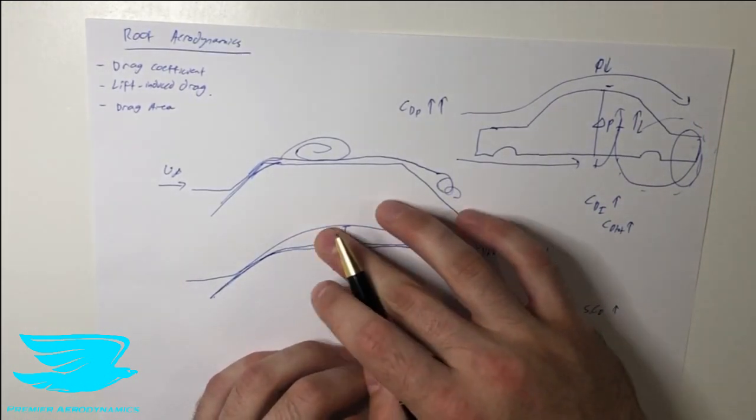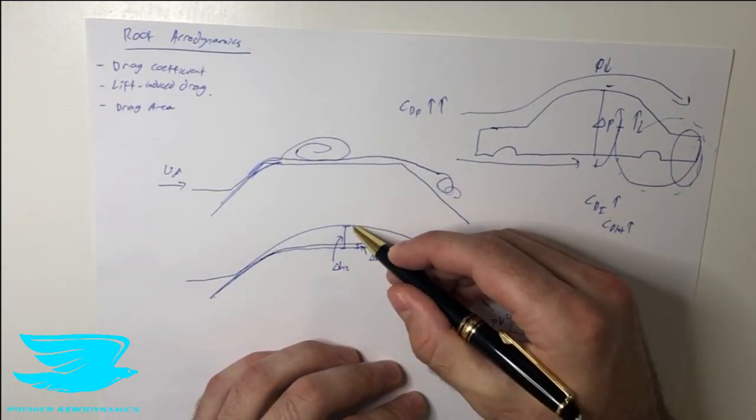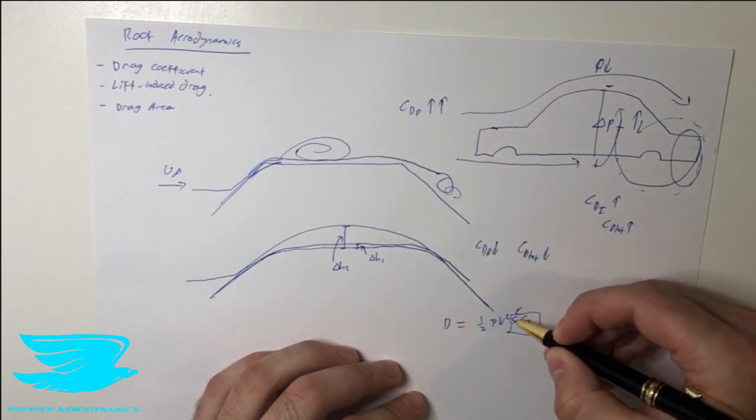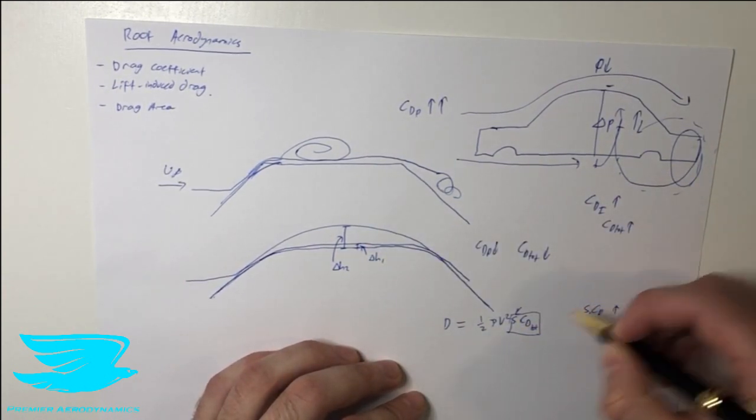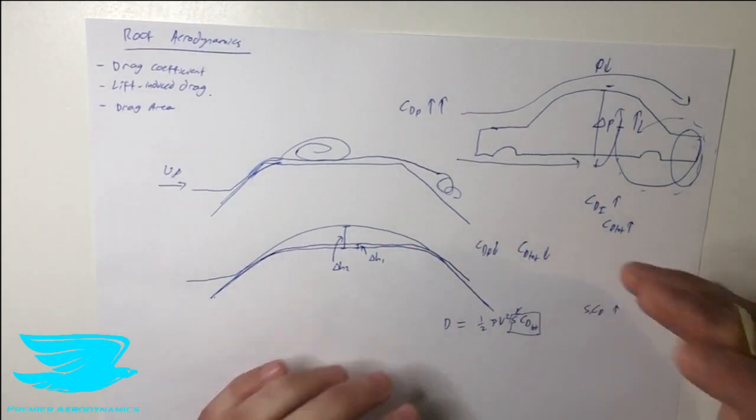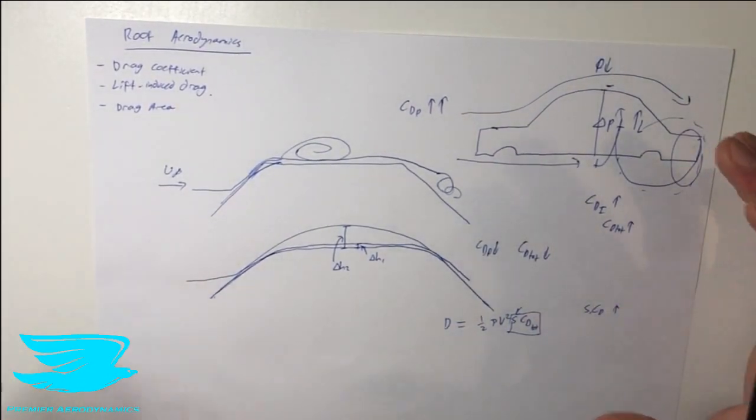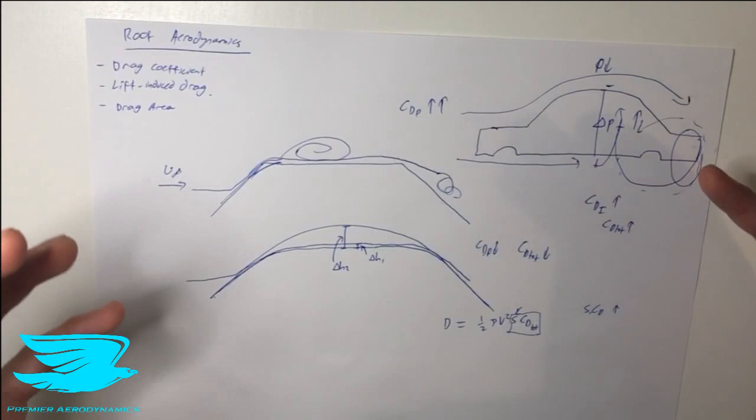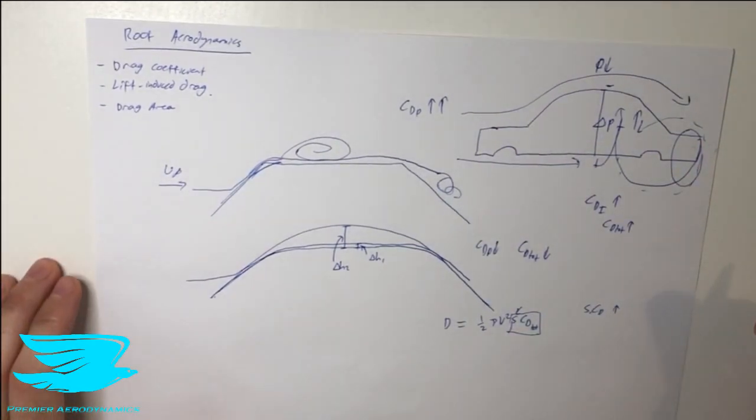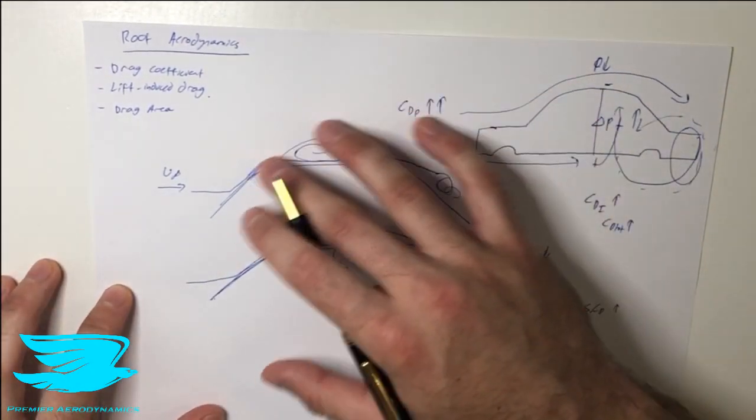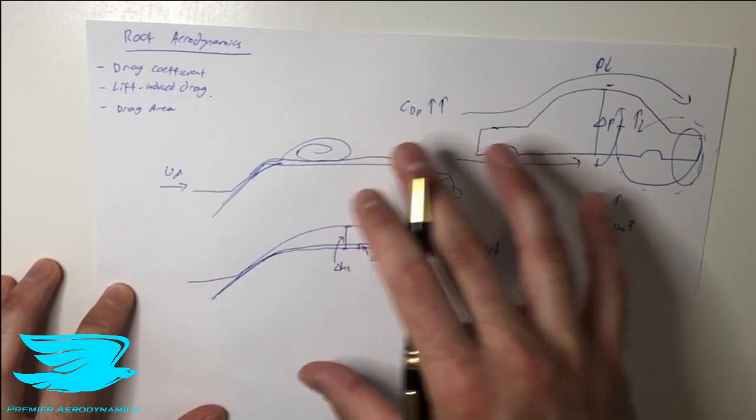So this is where this term drag area comes into it. So if we round the roof too much, the roof pops up too much, and we increase the surface area, which then increases the drag area and the total drag, the actual force on the car. That means that the car is using more fuel to go the same distance. So that's how rounding the roof and the roof itself affects the aerodynamics of the car.